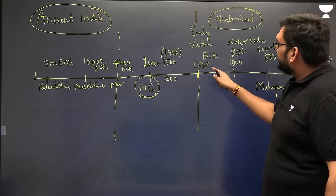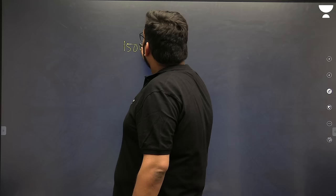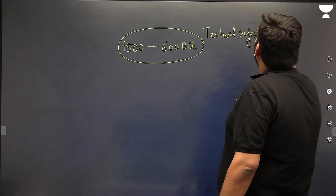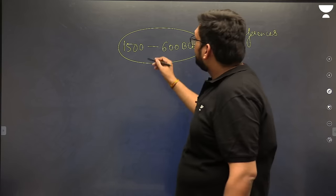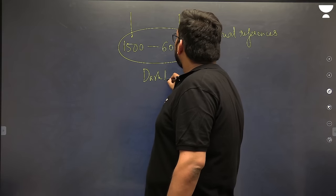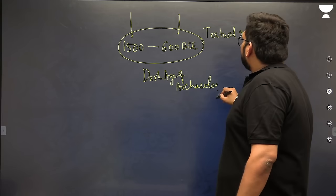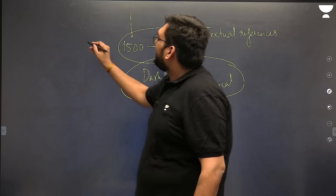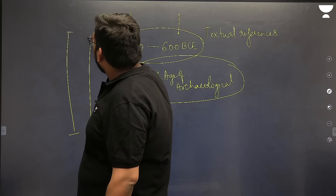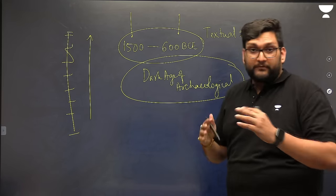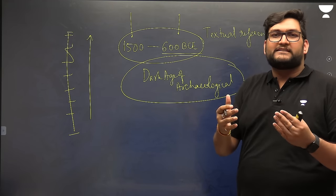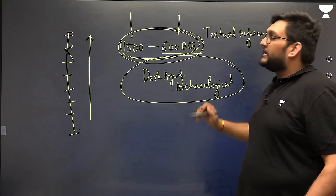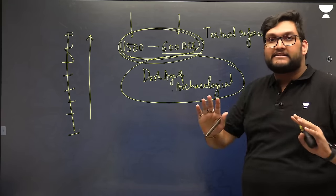Generally, this period from 1500 to 600 BCE — though we have a lot of textual references and texts written in Sanskrit and Brahmi script — there is a concept of the dark age of archaeology. It is called the dark age because we do not find much evidence; we have very rare sites, but no site where we find a stratified layer showing continuity from 1500 to 600 BCE. After 600 BCE we have important Mahajanapada cities, but in between there is no reference. This is why it is called the dark age of archaeology.